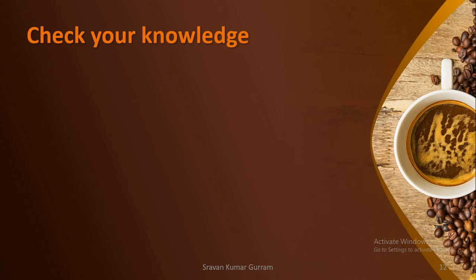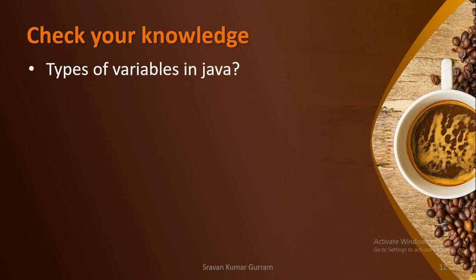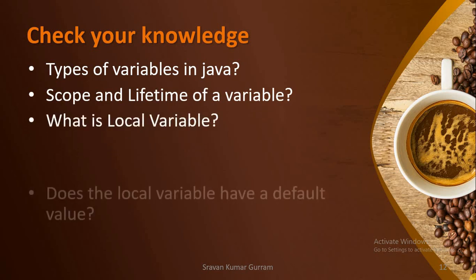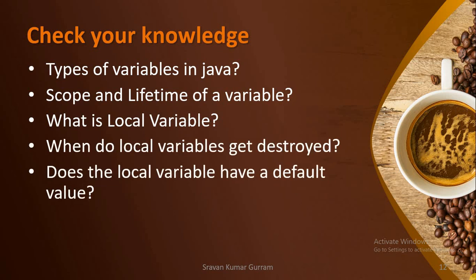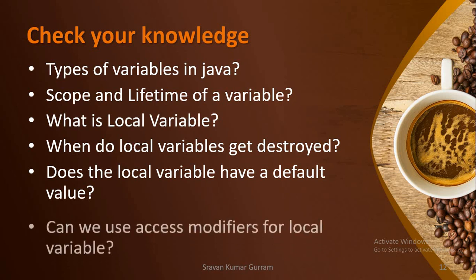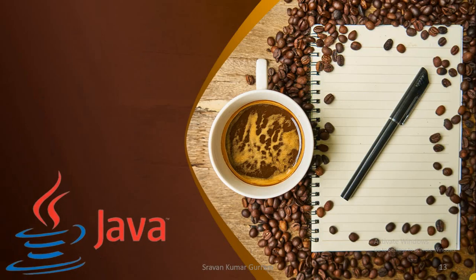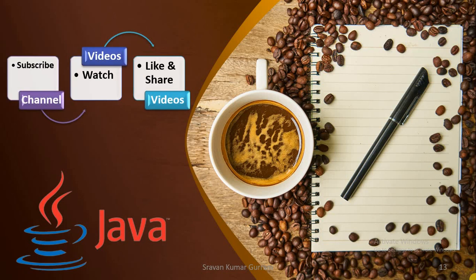Check your knowledge — what have we discussed in this video? Types of variables in Java, scope and lifetime of a variable, what is a local variable, when do local variables get destroyed, does the local variable have a default value, and can we use access modifiers for local variables. If this video is useful to you, subscribe to the channel for more useful videos. Like it and share it. Thank you.